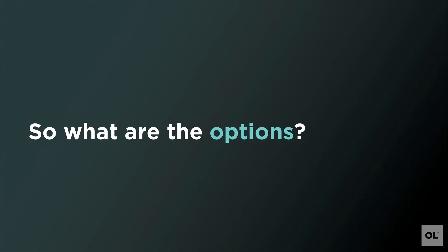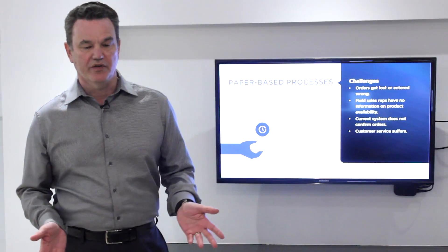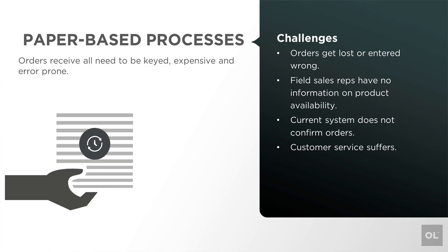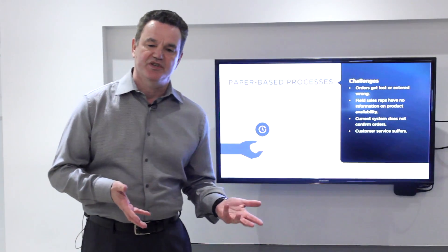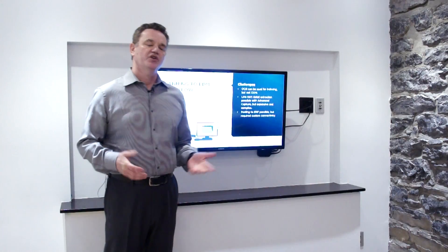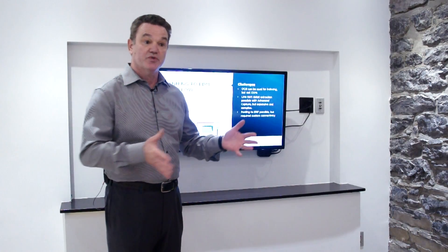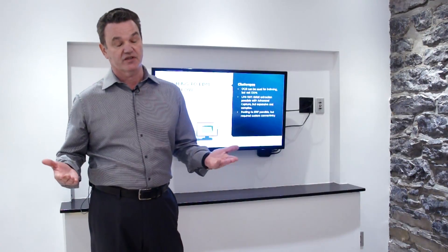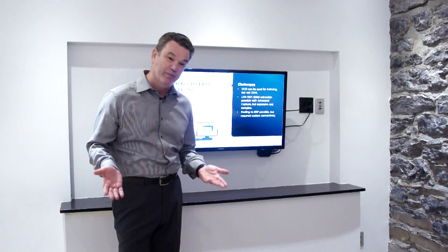What are the options you have to manage this business process? The most common way orders are processed is a completely manual system — inbound paper handled manually, things get lost, the system's a mess. That damages your reputation with your customer. The second way customers often move up from a paper-based system is to an ECM-based system, where documents are scanned in and flow through an organization. A great improvement, but it's still essentially a paper-based system.